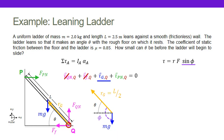I draw the vectors and can see that the angle between them is not the angle of my ladder but instead theta plus 90 degrees. Putting it all together: the magnitude of my position is L/2, the magnitude of my force is mg, and I need the sine of (90 + θ). Since sine of (90 + θ) equals cosine of θ, I've got my torque due to gravity.